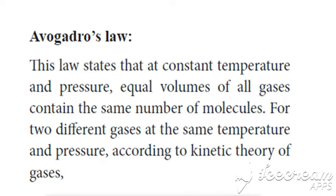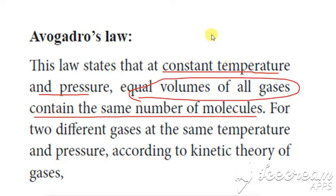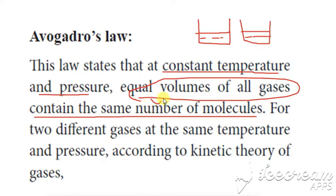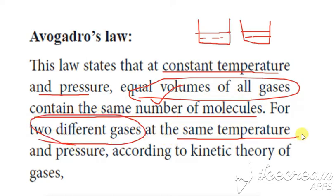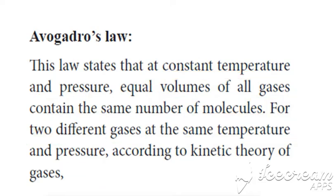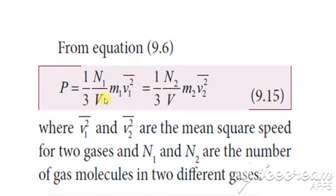Next, we are going to see Avogadro's law. At constant temperature and pressure, equal volumes of all gases contain the same number of molecules. Consider two different gases which are at the same temperature and pressure. Then, according to the kinetic theory of gases, we can write P = 1/3 × (N/V) × M × V². This is the formula we know already. This is for the first particle.